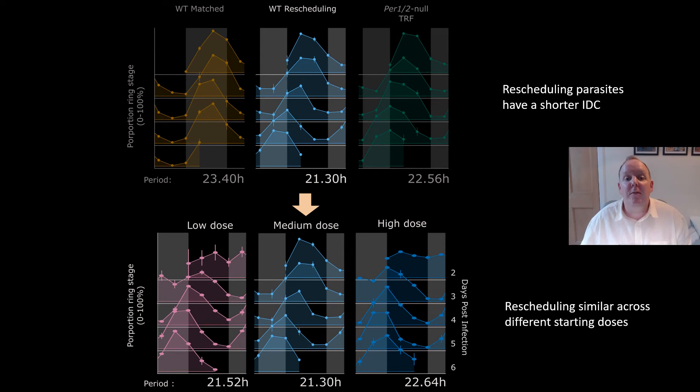To determine if the speed of rescheduling was dose dependent, we repeated the experiment at two different doses. A dose 10 times lower than the first experiment and a dose 10 times higher. While the high dose is a little slower, both groups are one to two hours shorter than the matched group from the first experiment. Therefore, we don't believe dose really makes a difference to the speed of rescheduling.